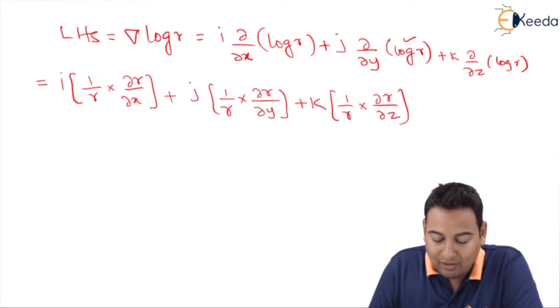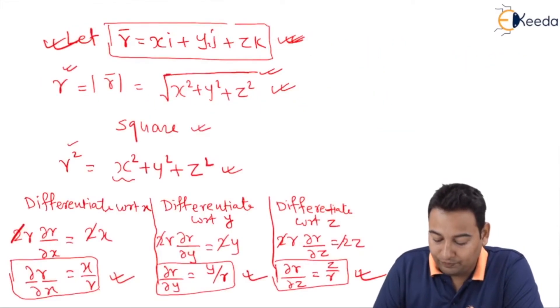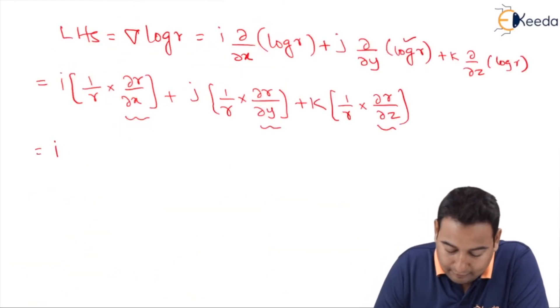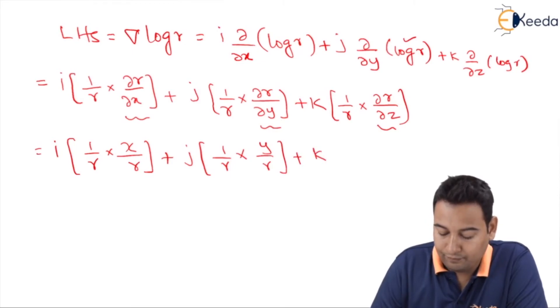From the last line boxes, dou r by dou x is x by r. This is y by dou r, and this is z by dou r. Let's take common here, friends - this is common.